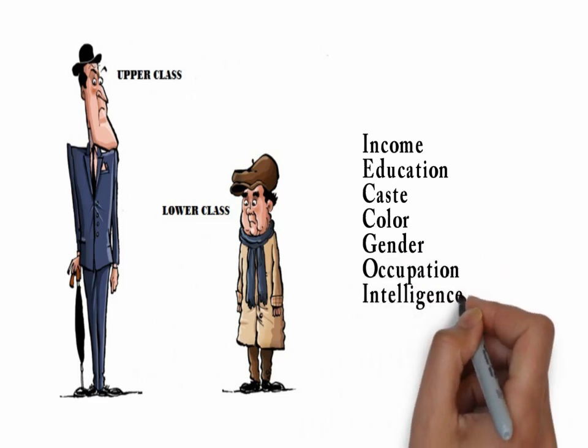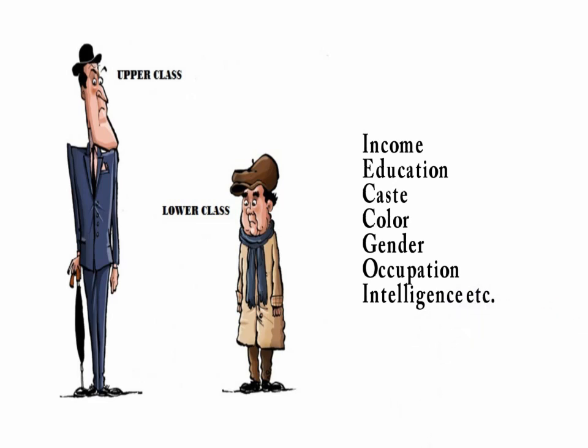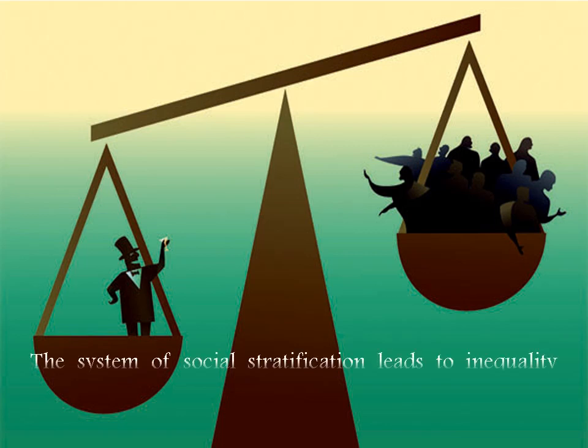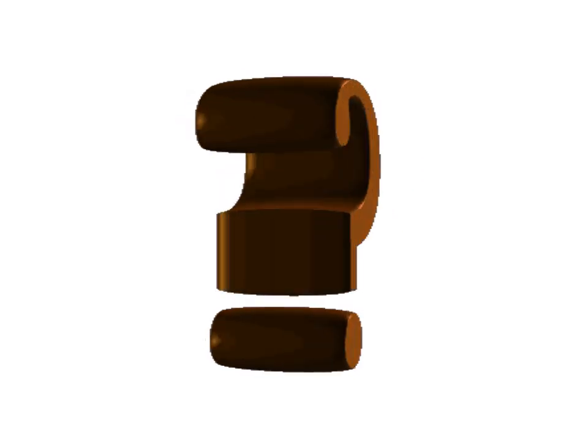This stratification has been done by the society. Various kinds of social stratification can be seen in different periods and in different countries. The system of social stratification leads to inequality and differences. What are the prejudices created due to discrimination?